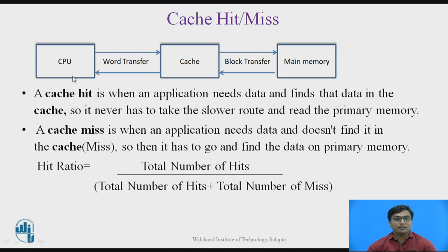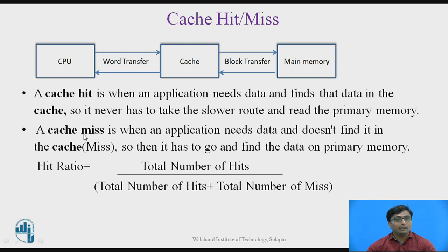Cache Miss is when the application needs data and that data is not found in Cache Memory. Then that data is fetched from the Main Memory and executed. Accessing data from the Main Memory will be slower. If the data is not found in Cache Memory, we say that is a Cache Miss.